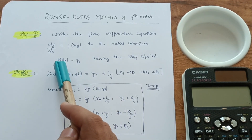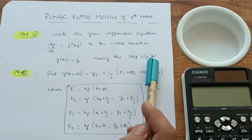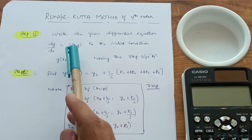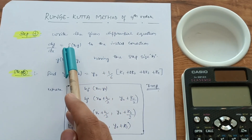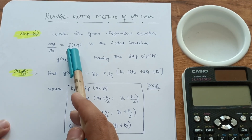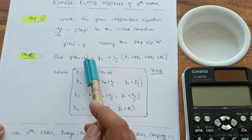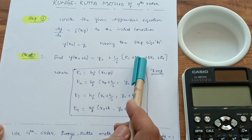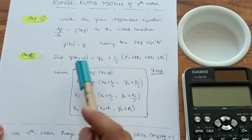The boundary condition is like dy/dx = f(x, y) with initial condition y(x₀) = y₀, and a step size h — you will understand h from the problem. Step two: find y(x₀ + h) = y₀ + (1/6)(k1 + 2k2 + 2k3 + k4). This is the general formula of the Runge-Kutta method.